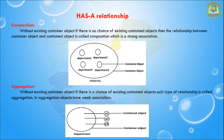For example, a university consists of several departments. Whenever the university object is destroyed, automatically all the department objects will be destroyed. Without an existing university object, there is no chance of an existing department object. Hence these are strongly associated, and this relationship is called composition.